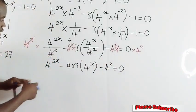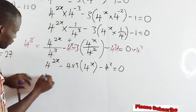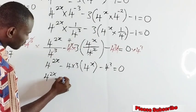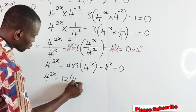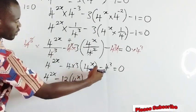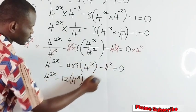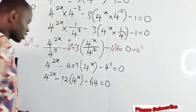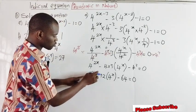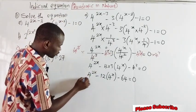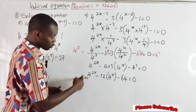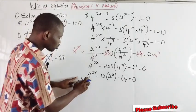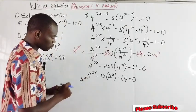Let's multiply out and expand. This gives 4 power 2x minus 4 times 3, which gives 12, into 4 power x. Over here, 4 power 3 is 64. So we have: 4 raised to the power of 2x minus 12 into 4 power x minus 64 equal to 0. Also, 4 raised to the power of 2x can be written as 4 raised to the power of x, squared — because multiplication is commutative.